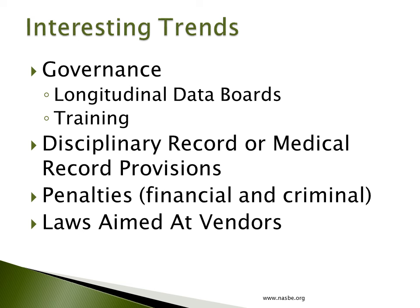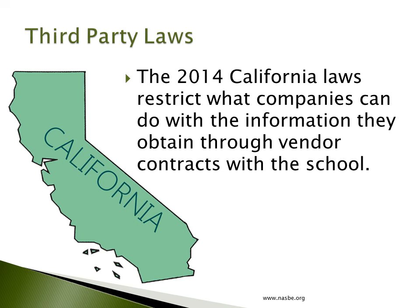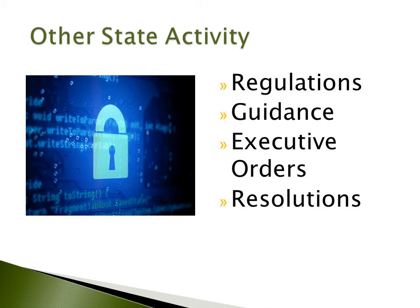There are also a lot of really great trends. Governance provisions — such as setting up a longitudinal data board and ensuring training — have been really great outcomes. Some states like New Jersey actually separate disciplinary and medical records from the standard student record to ensure breaches are much less likely. Many of the new laws have also added financial or criminal penalties. And the laws aimed at vendors — restricting what companies could do with information obtained through vendor contracts with schools — were something we had not seen before the 2014 California set of laws.